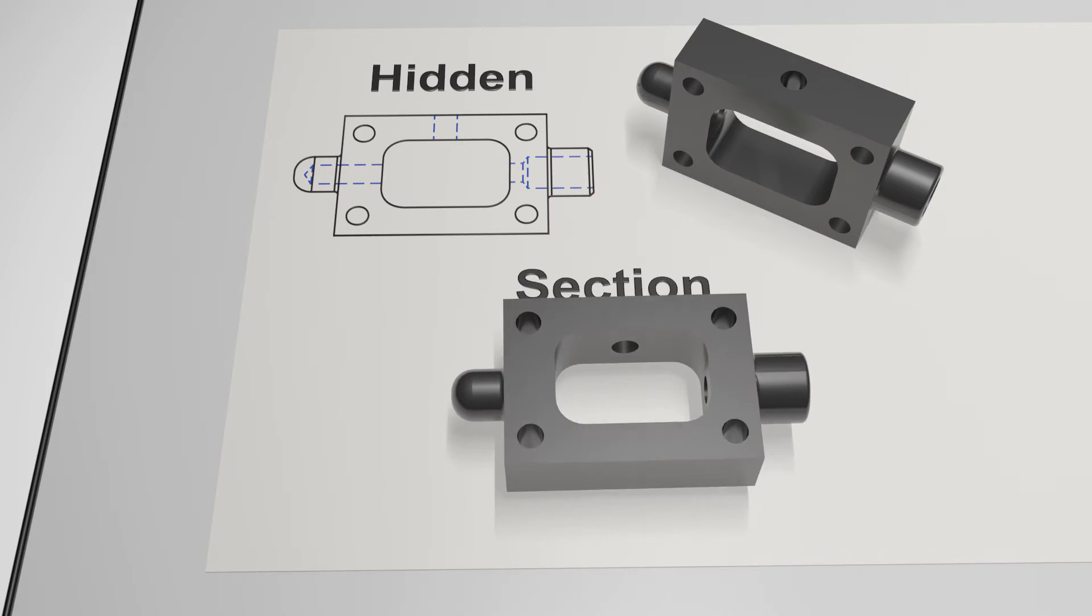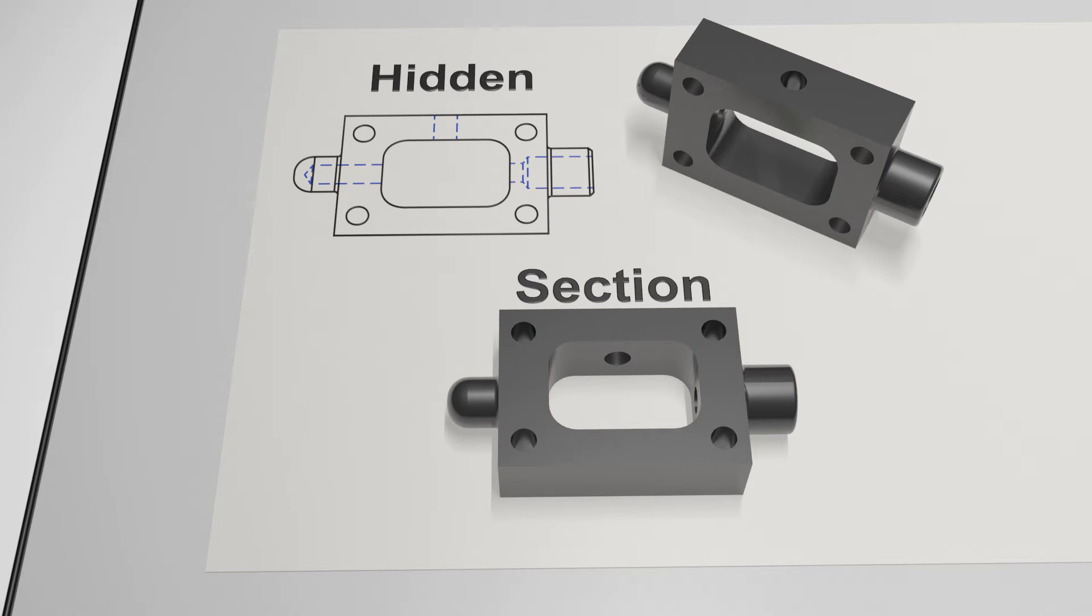Today we're going to have a look at section views as an alternative method with the same basic purpose in mind. What section views allow us to do is take a physical slice of the object aside and view the internal features as if they were at the surface of the object.